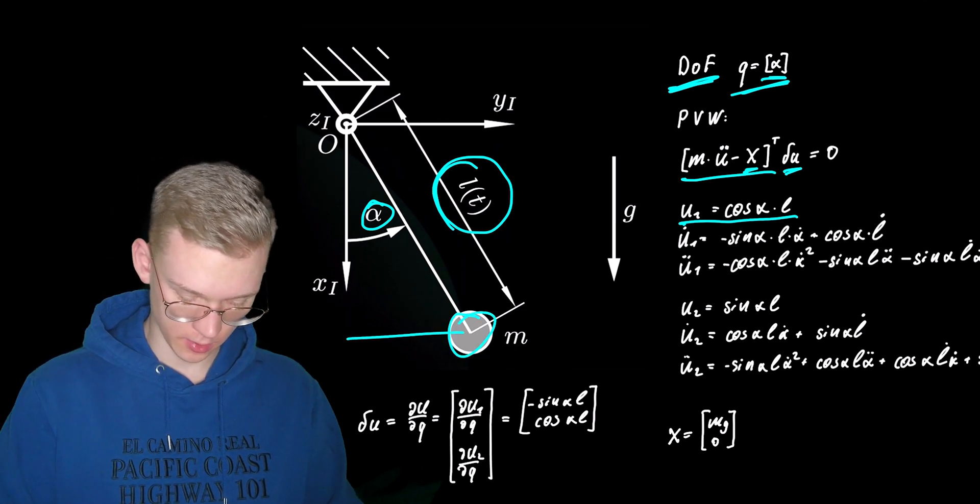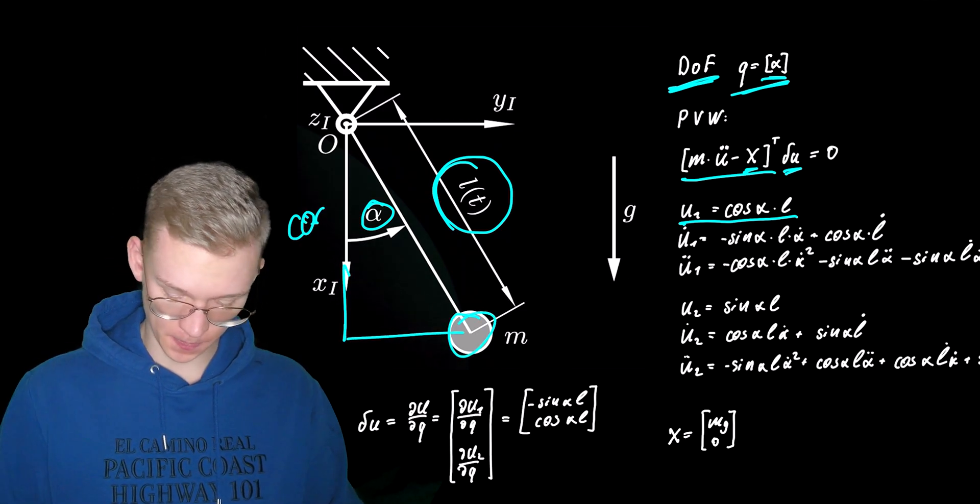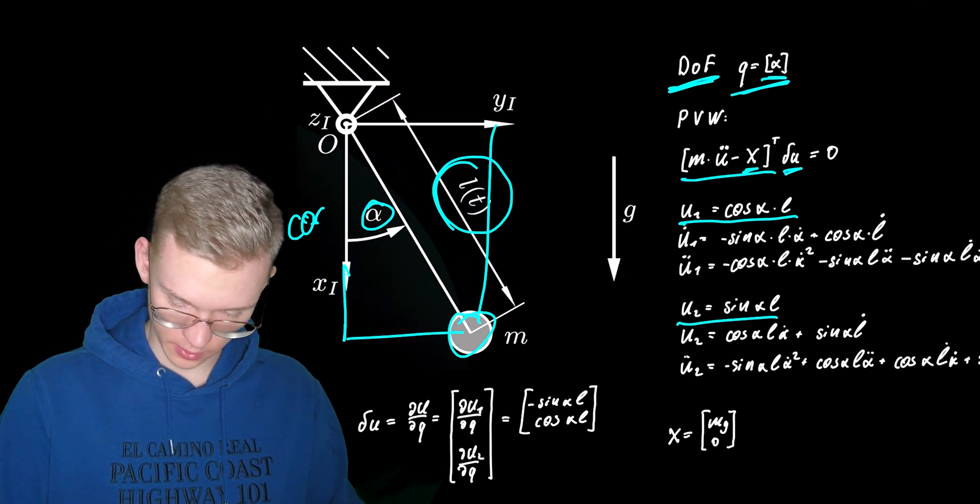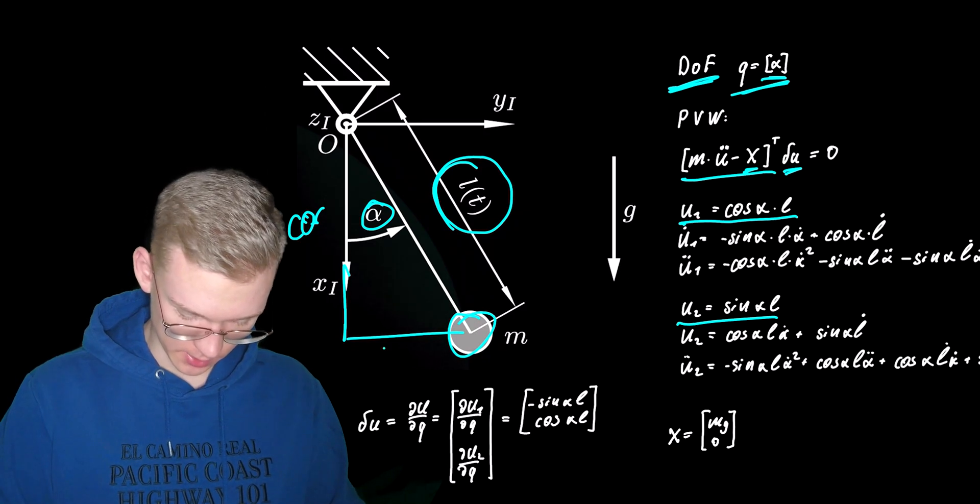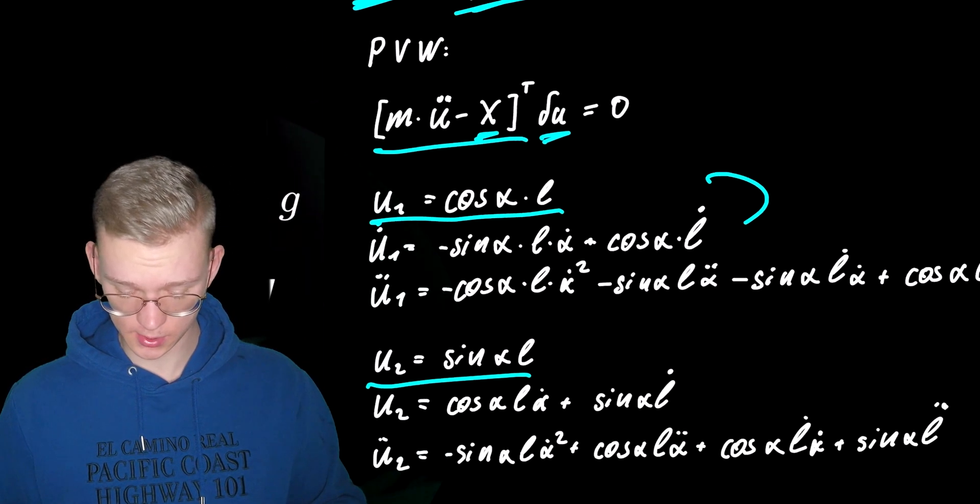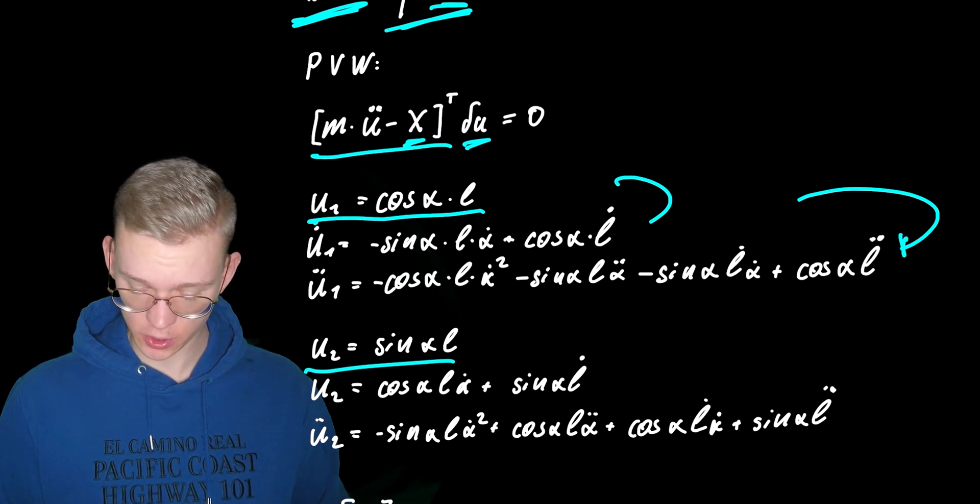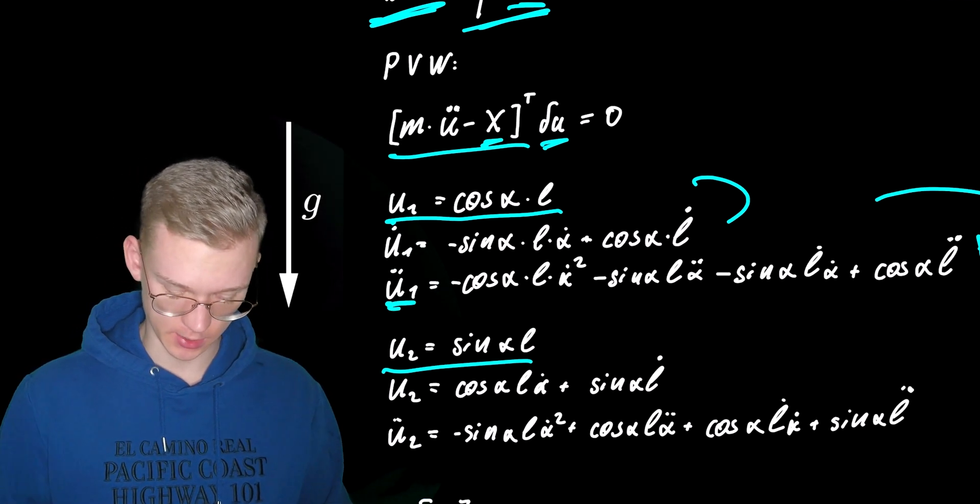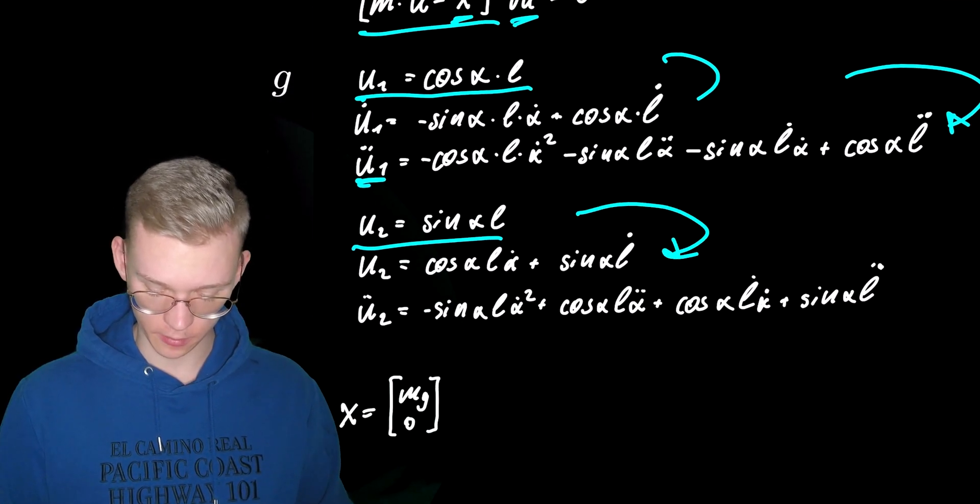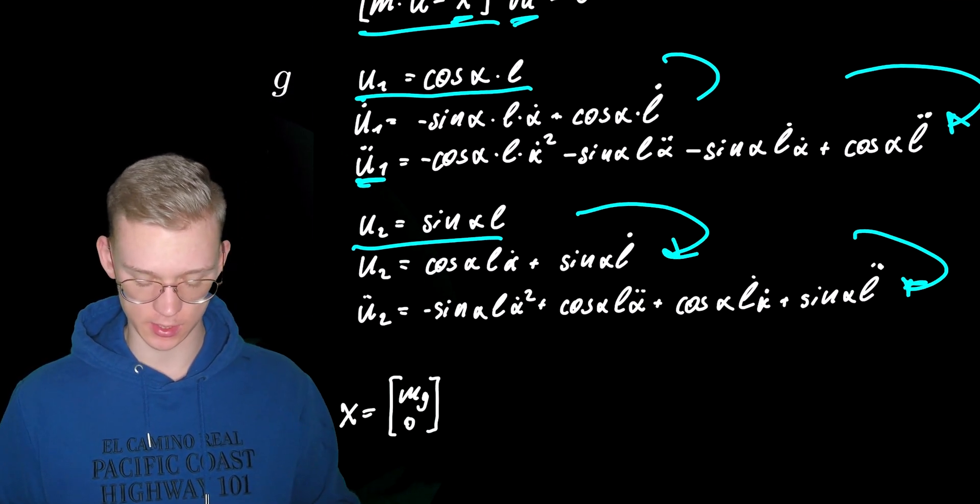So we have this as the cosine and we have u2 or let's do it another way we have this as the sine. So we do a derivation once then we do a second derivation in time to get the acceleration. We do the same thing for position two, we have the first derivation and then the second.